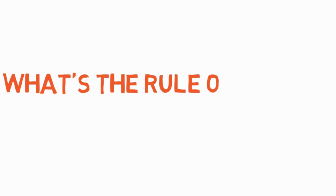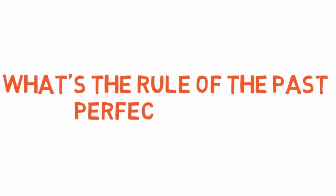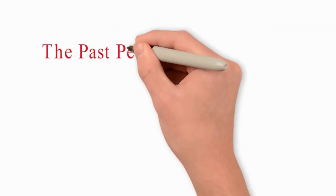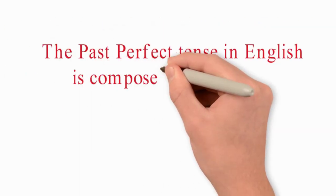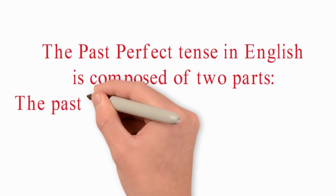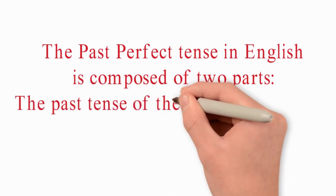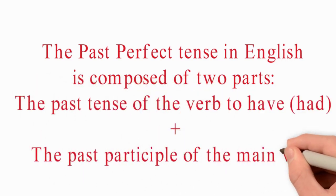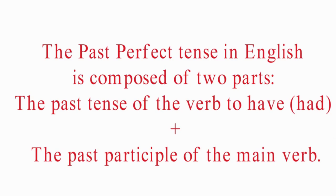So what's the rule of past perfect simple? The past perfect tense in English is composed of two parts: the past tense of the verb 'to have' — had — plus the past participle of the main verb.